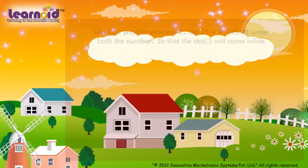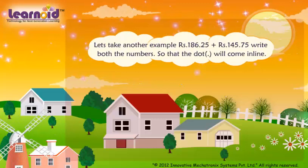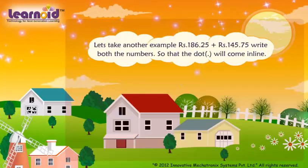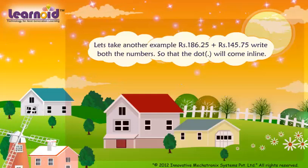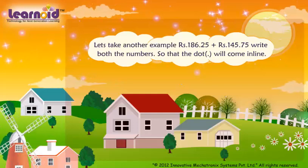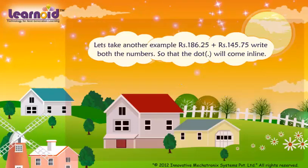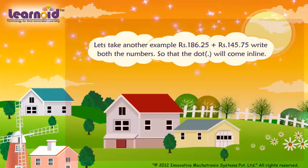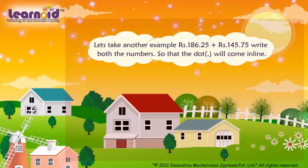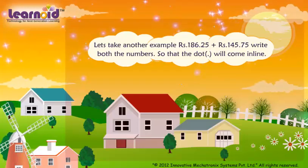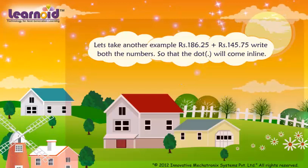Let's take another example: 186 rupees 25 paise plus 145 rupees 75 paise. Write both numbers so that the dot comes in line.